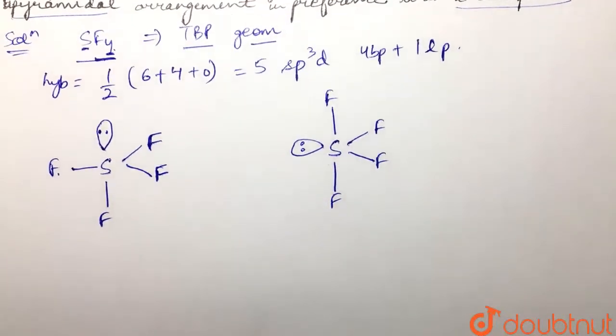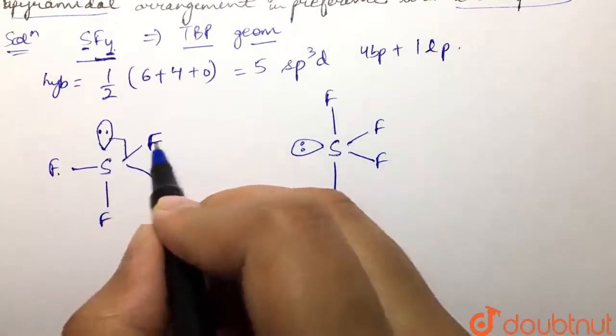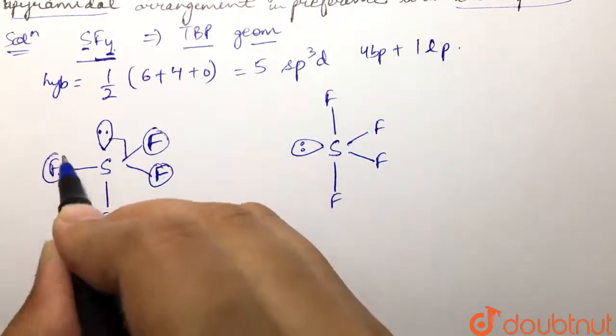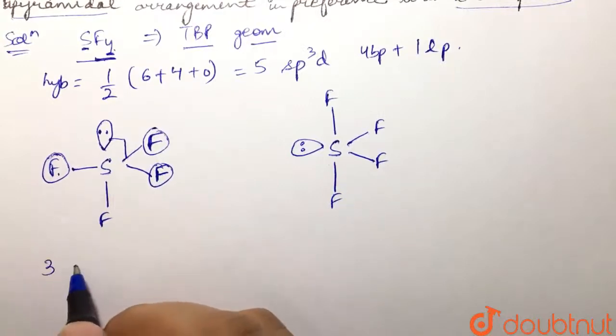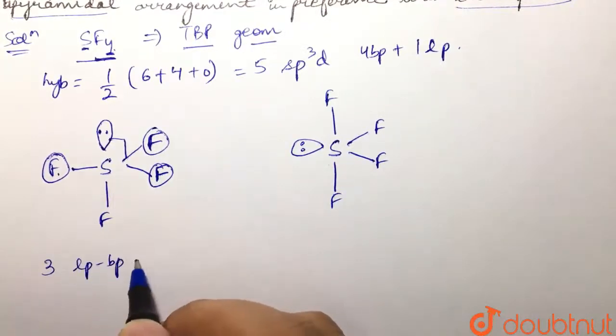If we look at our lone pair bond pair repulsion, this lone pair is present at 90 degrees to this and this fluorine, so we can say that we have three lone pair bond pair repulsions that are present at 90 degrees.